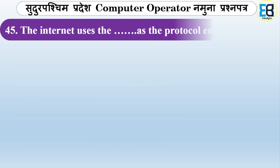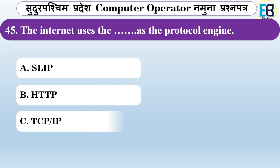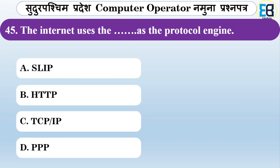The internet uses which protocol? Options are SLIP, STTP, TCP/IP, or BPP. The correct answer is TCP/IP — the internet uses TCP/IP, which stands for Transmission Control Protocol and Internet Protocol.